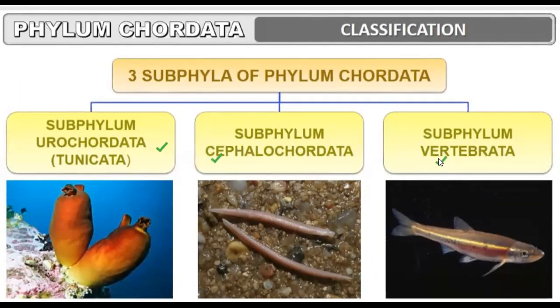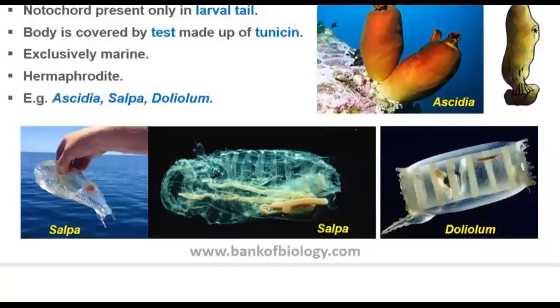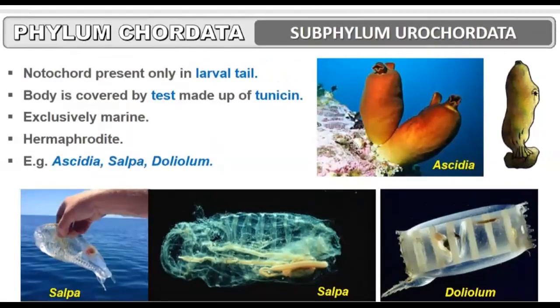Urochordata are the primitive chordates. Cephalochordata are chordates that have a head — 'cephalo' refers to head. In Vertebrata, the notochord is converted into the vertebral column. For Urochordata: notochord is present only in the larval tail. The body is covered by a test made up of tunicin, and these organisms are exclusively marine.